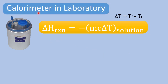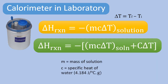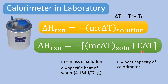However, the calorimeter in the laboratory is not perfect. A perfect calorimeter would be a very good insulator and would not absorb any heat. Unfortunately, our laboratory calorimeter is a very simple one, so the calorimeter itself will take some of the heat. Therefore, we must also calculate the heat capacity of our calorimeter.